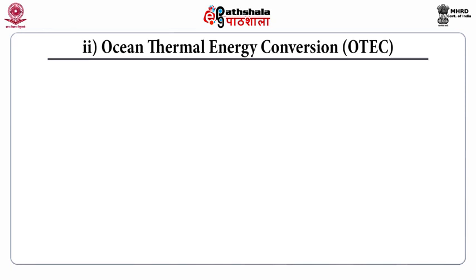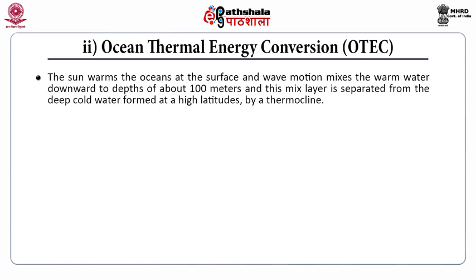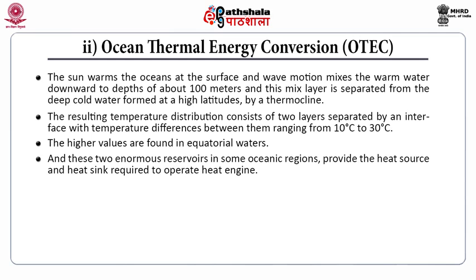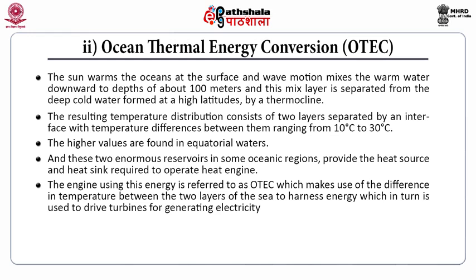Ocean Thermal Energy Conversion (OTEC): the sun warms the oceans at the surface and wave motion mixes the warm water downward to a depth of about 100 meters. This mixed layer is separated from the deep cold water formed at high latitudes by a thermocline. This boundary is sometimes marked by an abrupt change in temperature, more often the change being gradual. The resulting temperature distribution consists of two layers with temperature differences ranging from 10°C to 30°C, with higher values found in equatorial waters. These two enormous reservoirs in some oceanic regions provide the heat source and heat sink required to operate a heat engine — OTEC — which uses the temperature difference between the two layers to harness energy and drive turbines for electricity generation.